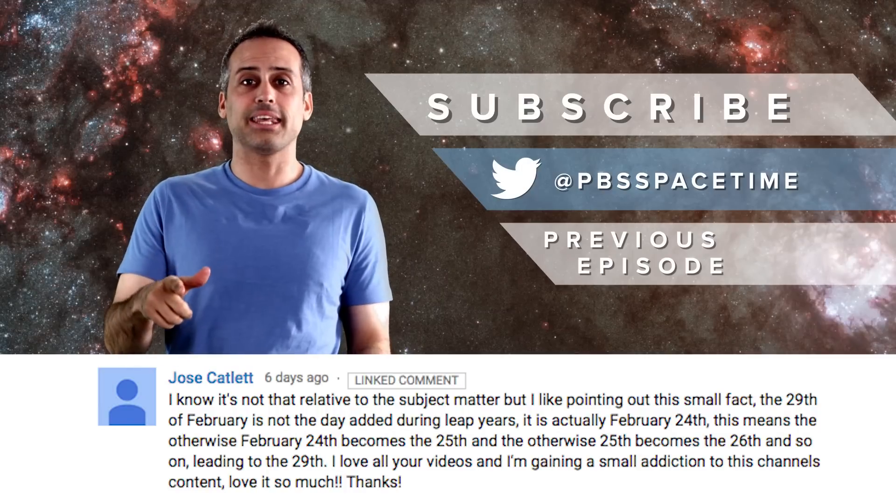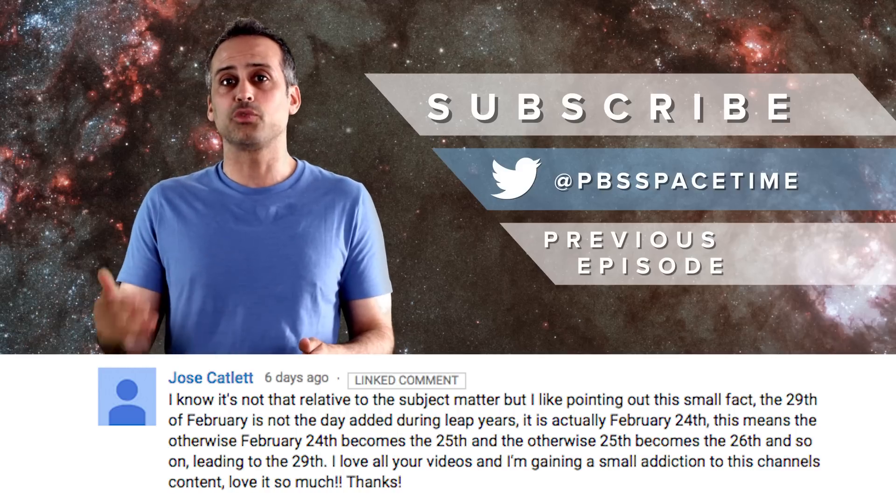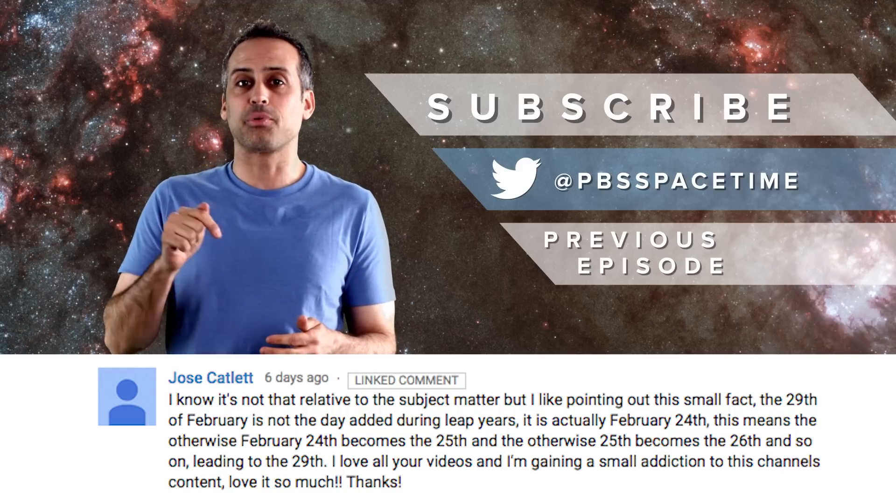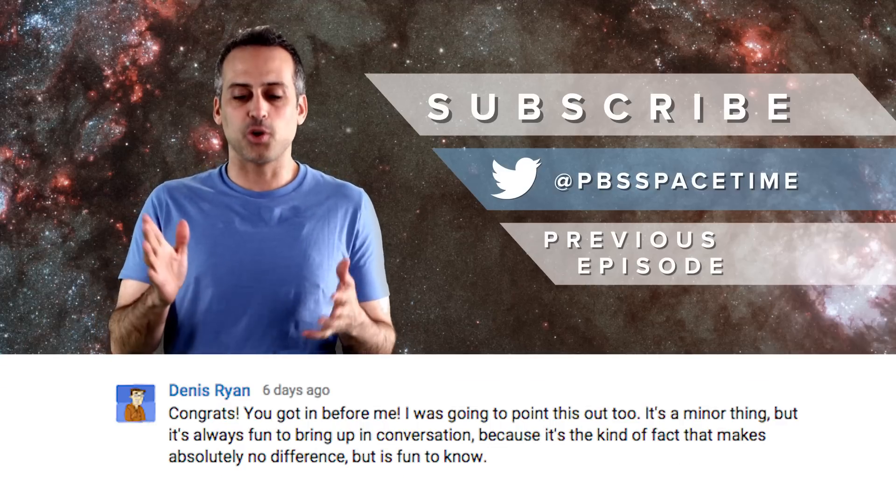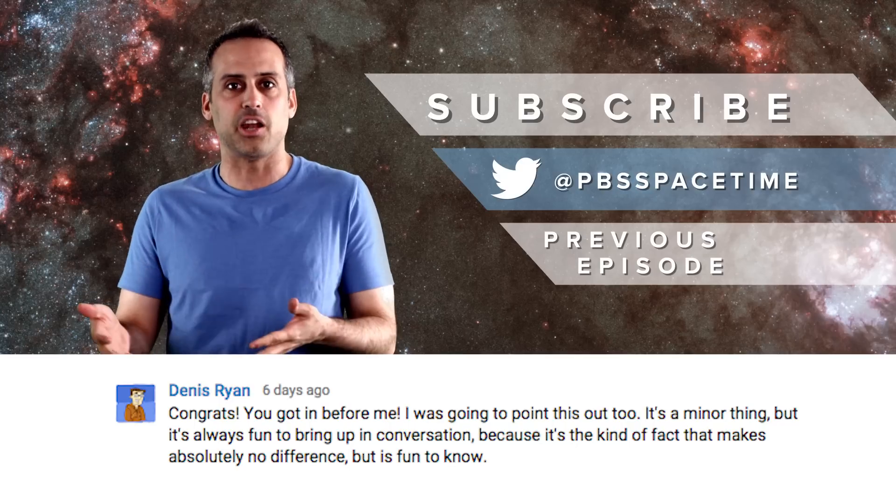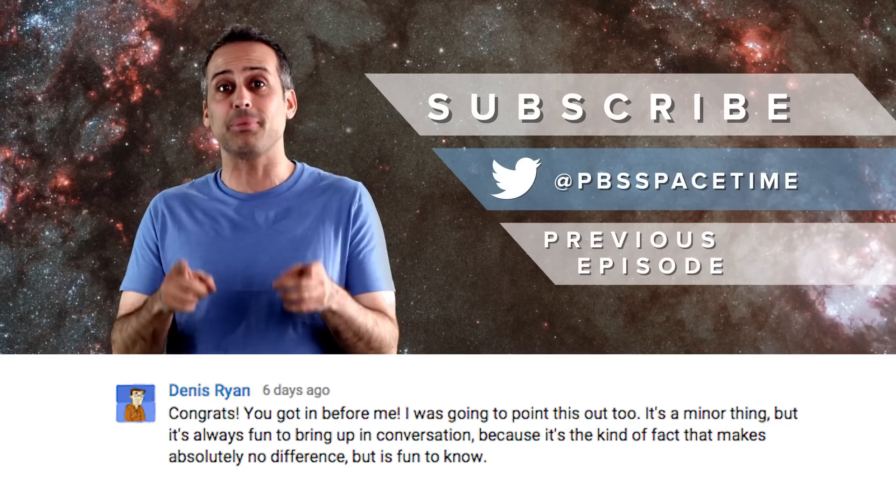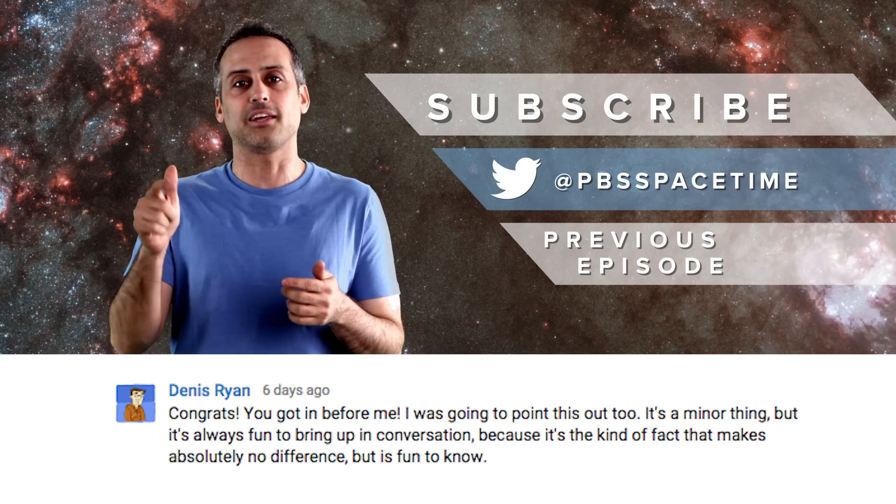Finally, Jose Catlett and Dennis Ryan left us with a fun fact about leap years. In the Gregorian calendar, we add February 29th. But in the Julian calendar that preceded it, we simply doubled February 24th on leap years. Now, I'm not sure when exactly the transition occurred to sequential numbering of days even on leap years, but I'd love to find out. So if you happen to know, please go back to the Australia episode and leave a comment in Jose Catlett's thread.